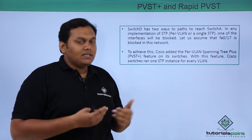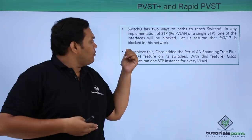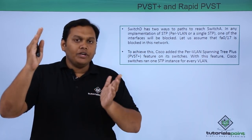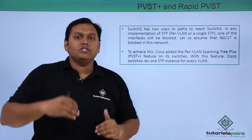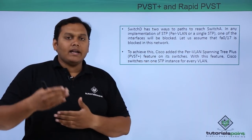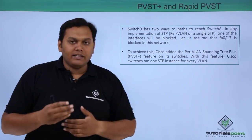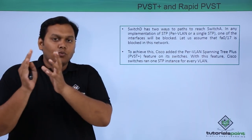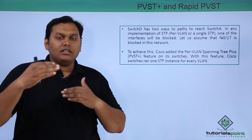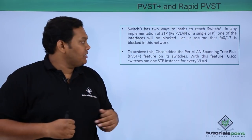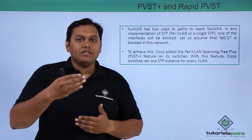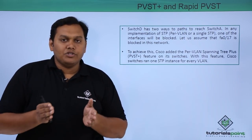In the Per VLAN STP implementation, one of the interfaces will be blocked to prevent loops. Assuming interface 17 is blocked, Switch D communicates with Switch A only through interface 20. Cisco added PVST+ to block one interface so that a traffic loop is not created. With this feature, Cisco switches run one STP instance per VLAN on the switch.